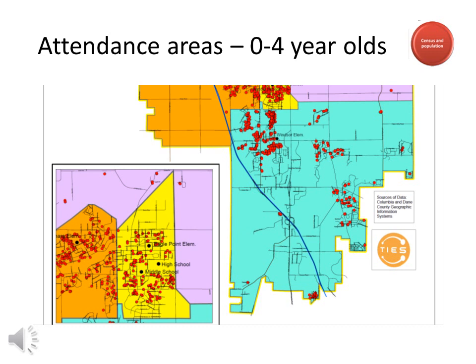We plotted the location of birth-to-4-year-olds using information from our recent census. We anticipate steady enrollment at both Eagle Point and Yahara Elementary Schools, and we are also seeing clusters of new students in developments in and around Windsor. This shows us that the number of students in all elementary attendance areas will continue to grow, even as current students move up to the middle school grade levels.